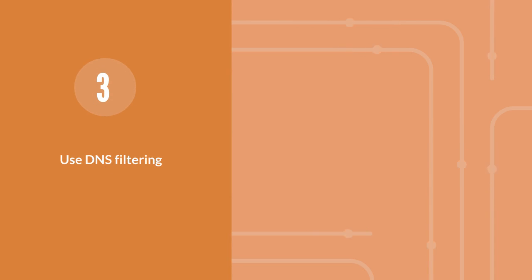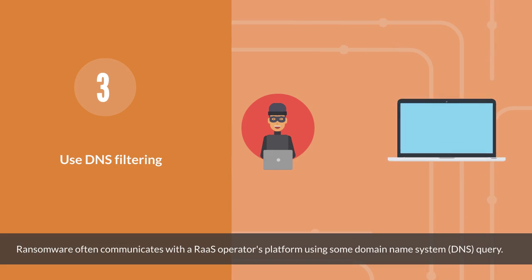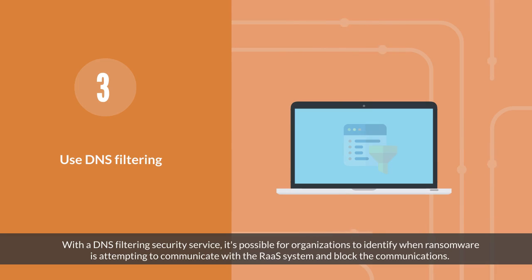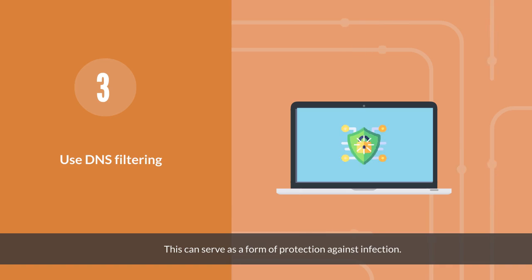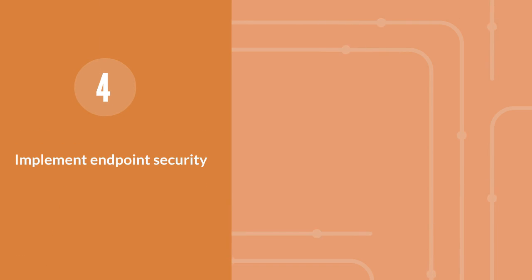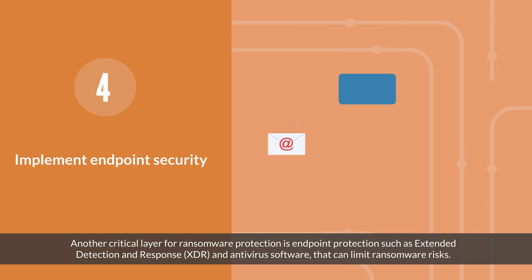Third, use DNS filtering. Ransomware often communicates with the RaaS operator's platform using DNS queries. With a DNS filtering security service, it's possible for organizations to identify when ransomware is attempting to communicate with the RaaS system and block those communications, serving as a form of protection against infection.